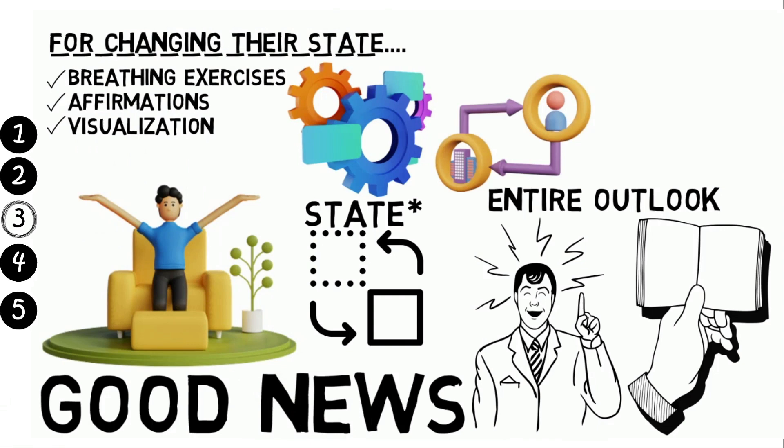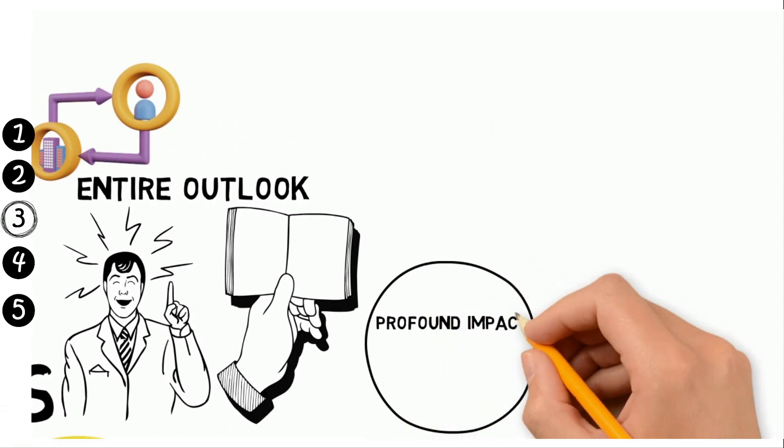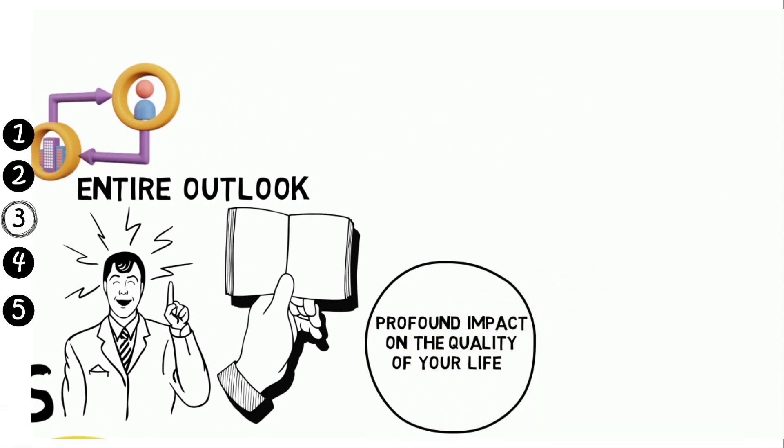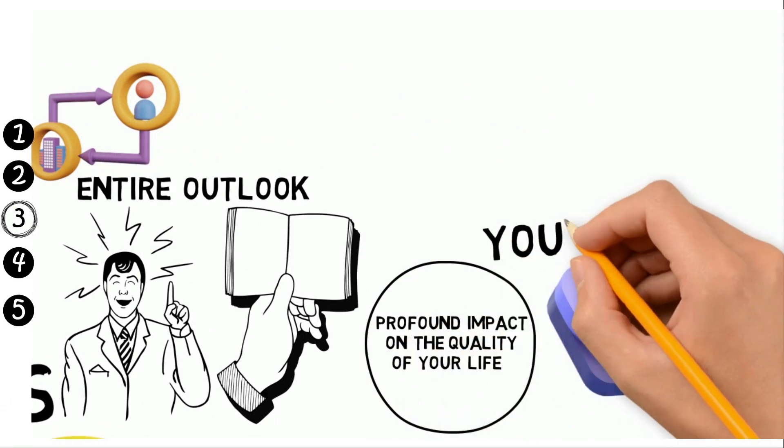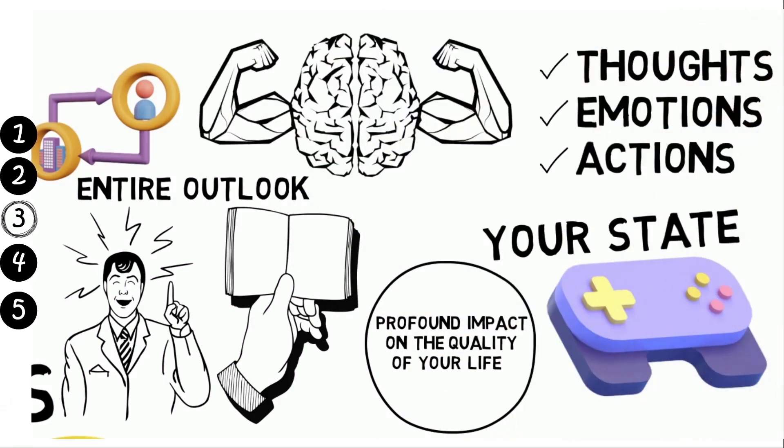While some of these techniques may seem simple, Robbins contends that they can have a profound impact on the quality of your life. By learning to control your state, you can develop unlimited power over your thoughts, emotions and actions.